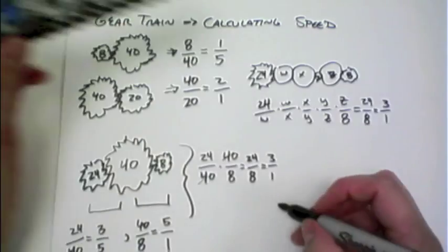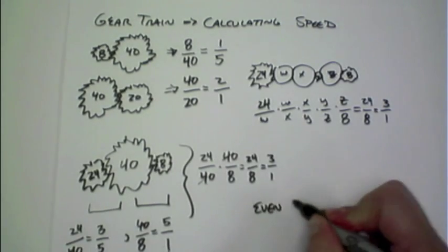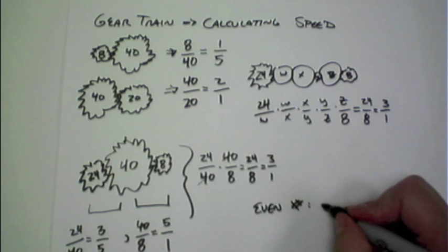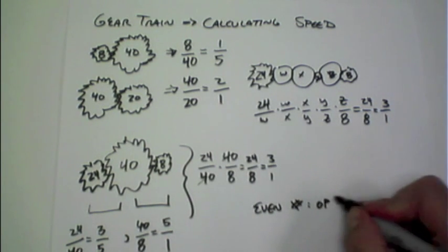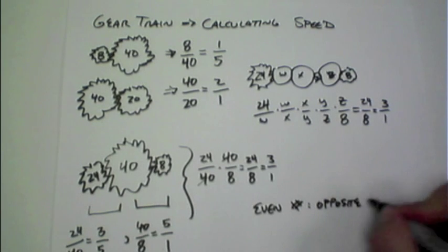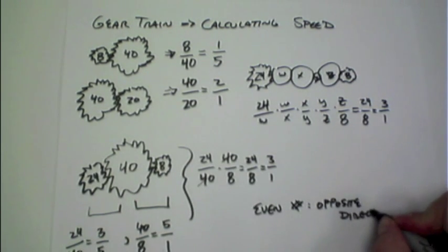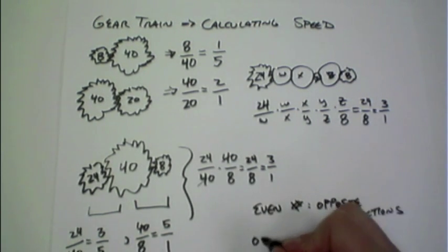So if there's an even number of gears, then what you find is that the two first and last gears turn in opposite directions, and if you have an odd number, they will turn in the same direction.